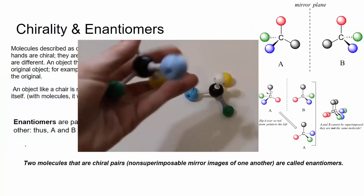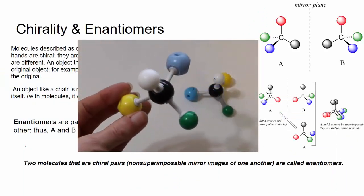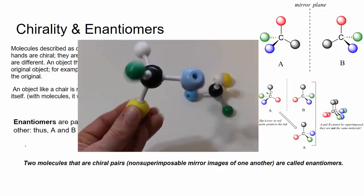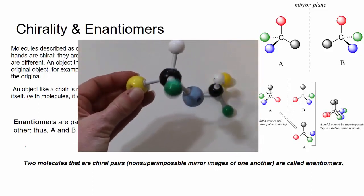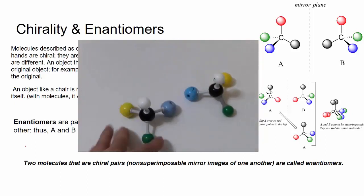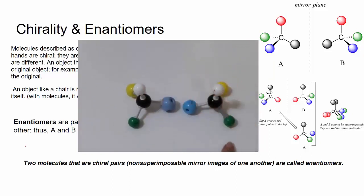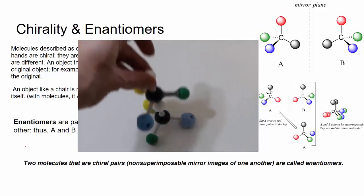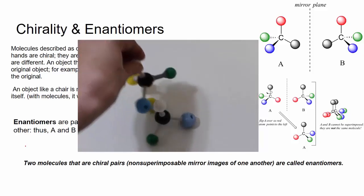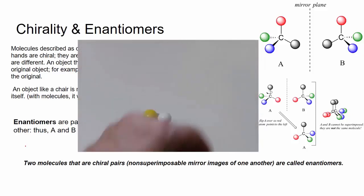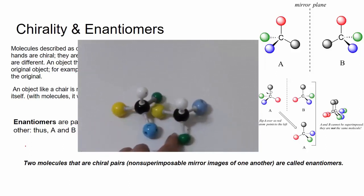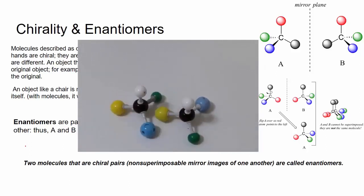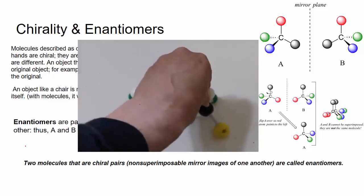Here we have an asymmetric carbon — it's sp3 hybridized and has four different groups; I'm using different colors in my model kit to show those different groups. Now I've made the mirror image. Here are the mirror images, but they are not superimposable. No matter which way I turn this molecule, the green and blue atoms won't align. Therefore they are different molecules — different asymmetric centers. So these are enantiomers; their mirror images are not superimposable.